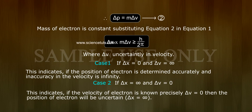Case 2: If Δx = ∞ and Δv = 0, this indicates if the velocity of electron is known precisely (Δv = 0), then the position of electron will be uncertain (Δx = ∞).